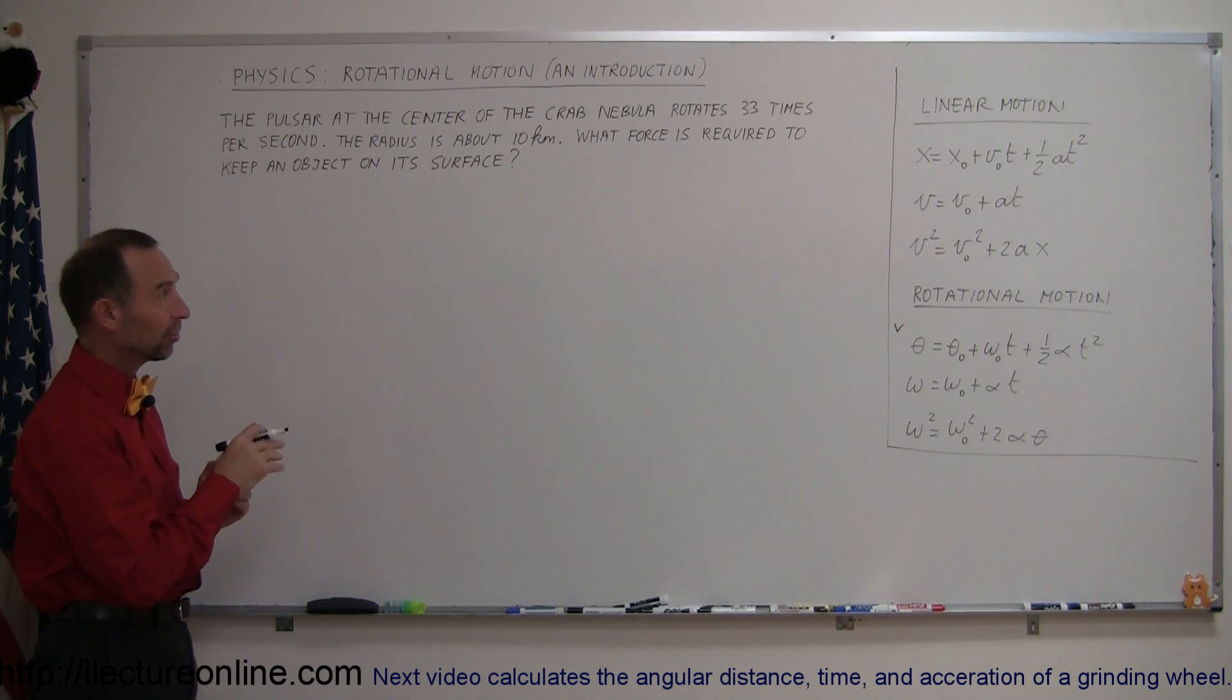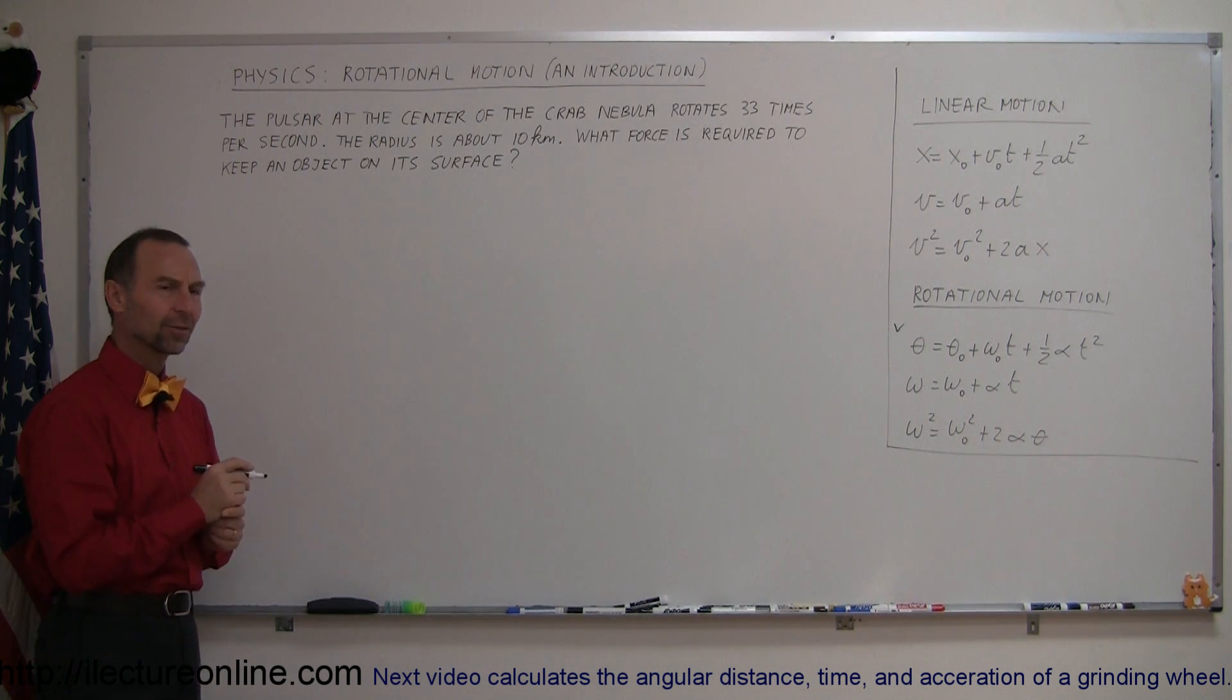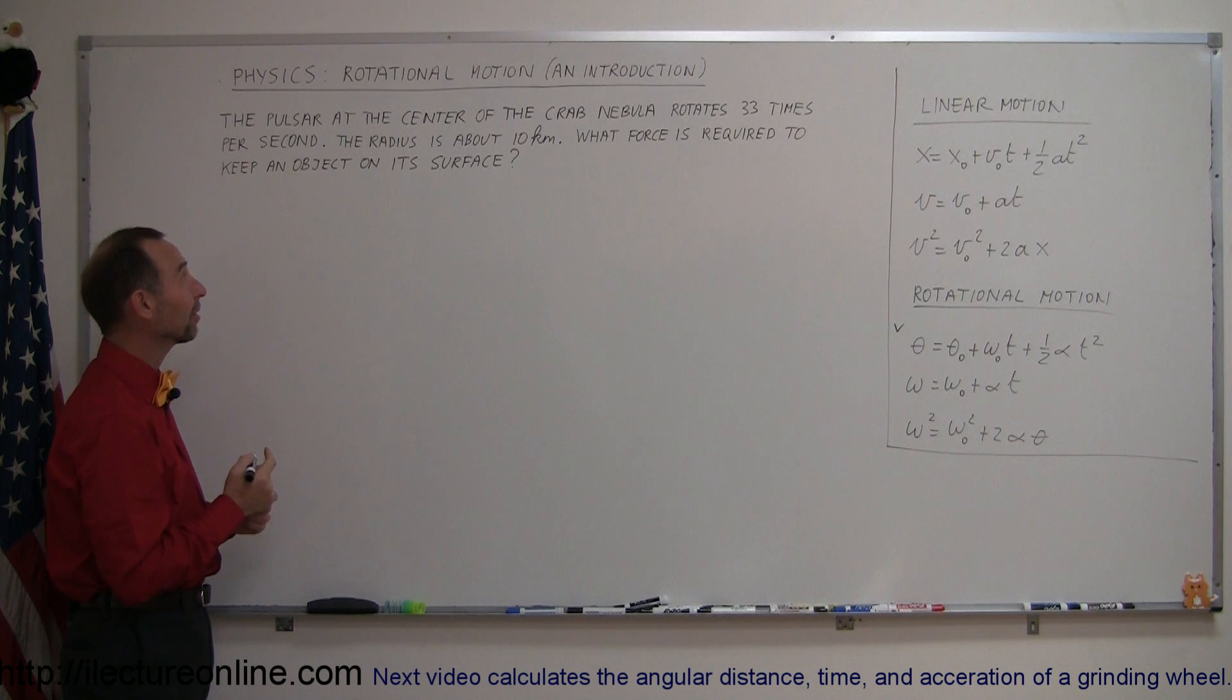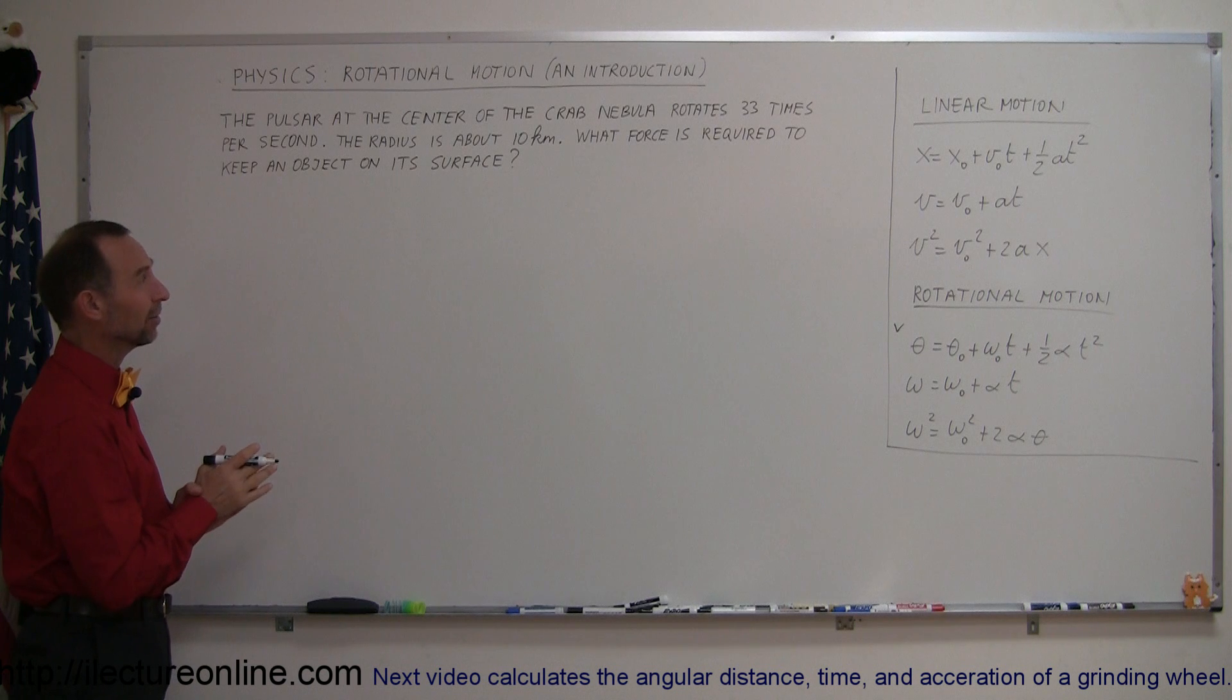That pulsar inside that nebula rotates 33 times every second on its axis. Wow, so it's spinning really really fast. The radius of a pulsar like that is about 10 kilometers, about 6 miles.